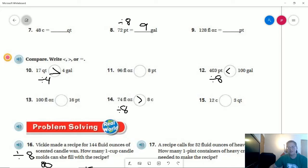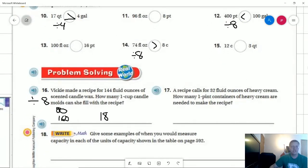For 400 pints, we are going to divide by 8, and that would give us 50 pints. So 50 pints on this side versus 100, this side would be smaller. Number 16, we made 144 fluid ounces of scented candle wax. How many 1 cup candle molds can she fill? That should come out to 18.